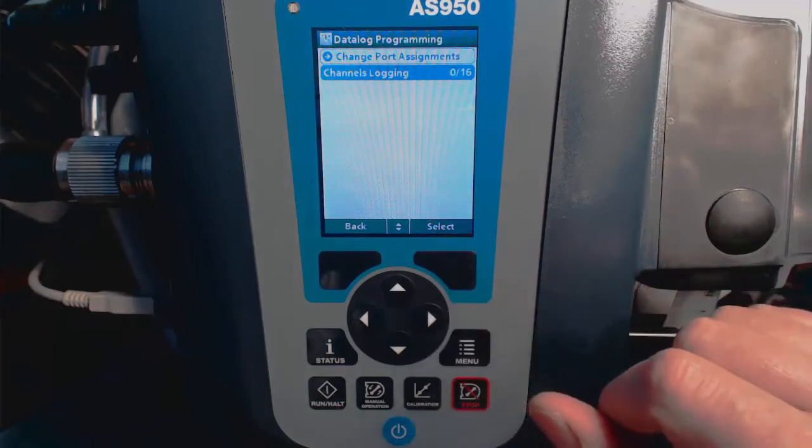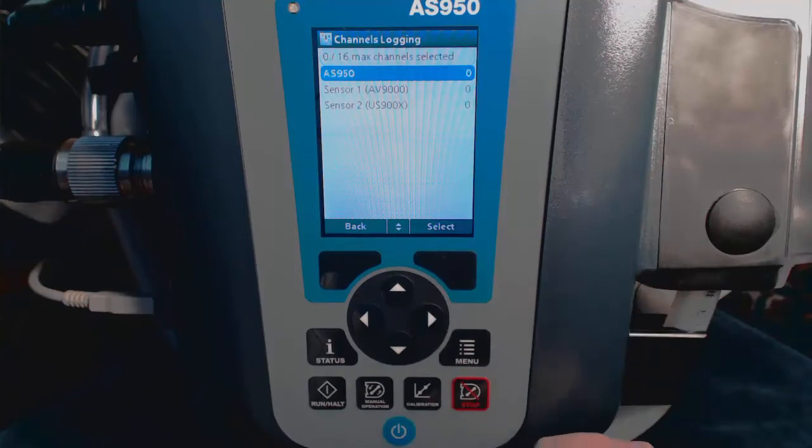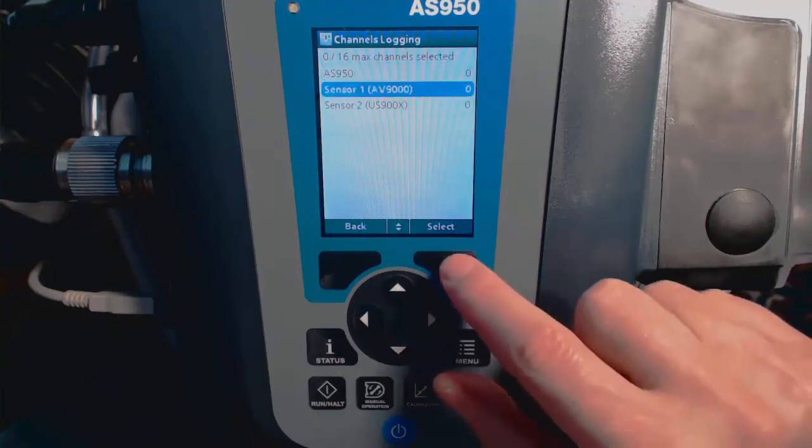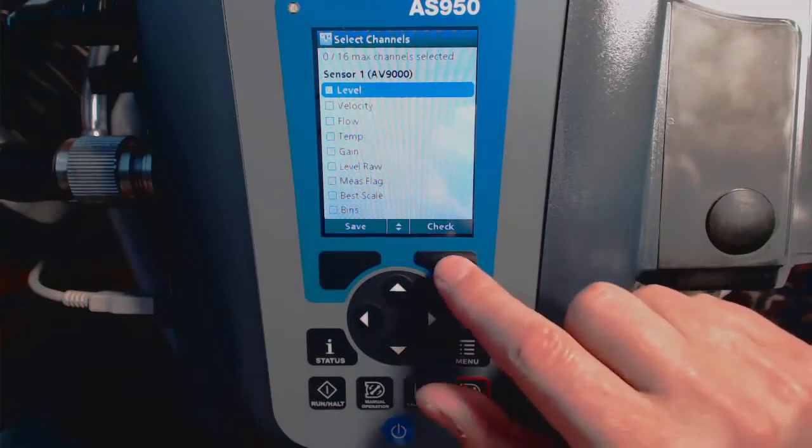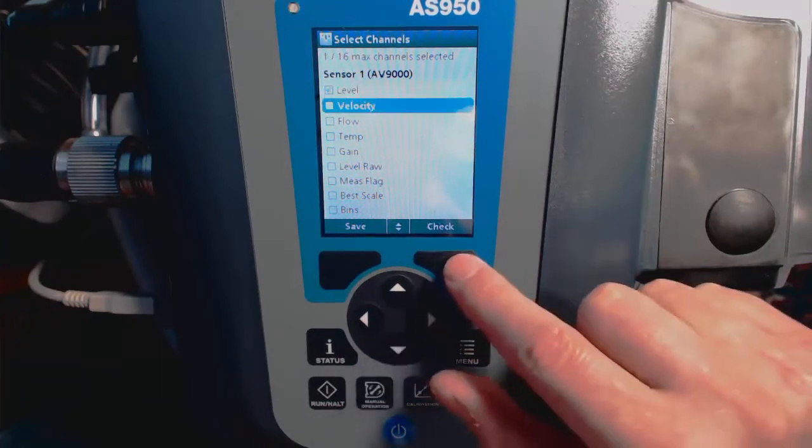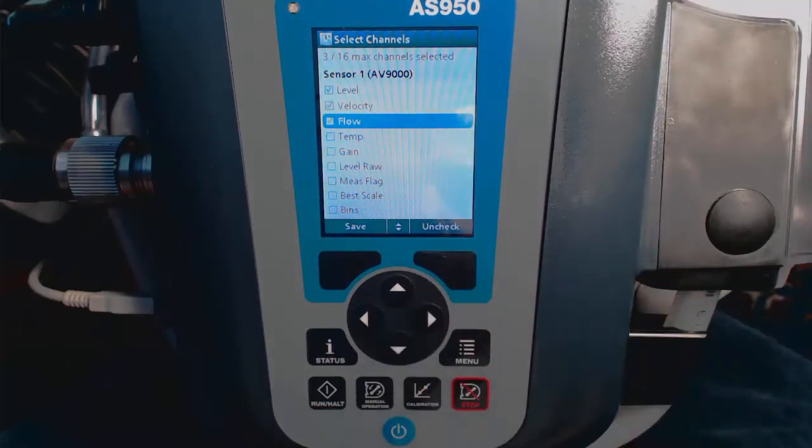And now we will choose Channel Logging, and now highlight the AV9000 and press Select. Then we'll select what channels we want to measure, and in this case we'll select Level, Velocity, and Flow.